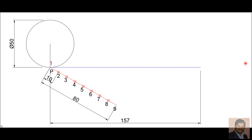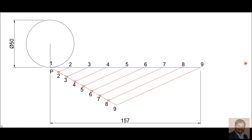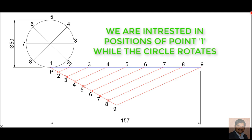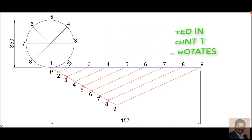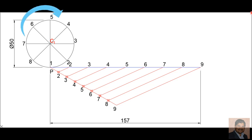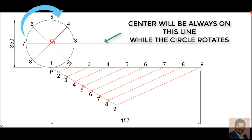Using a roller scale — the method is given in the previous video, I will paste the link in the description — these are my eight equal parts. I have divided the circle into eight equal parts. Now I want to locate the locus of point P, which I can also call point 1. The circle center is C1.